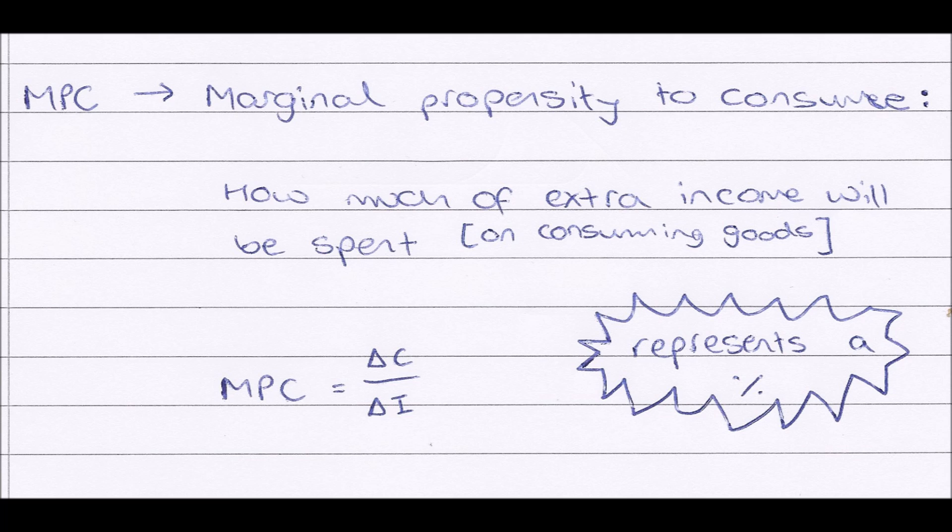How much of our extra income, how much extra money we're getting in each month, will be spent on consuming goods. We work out our MPC by MPC, marginal propensity to consume, equals change in consumption divided by our change in income. That's what our triangle means there, our delta symbol, change in. So our MPC equals change in consumption, so how much extra we spend,